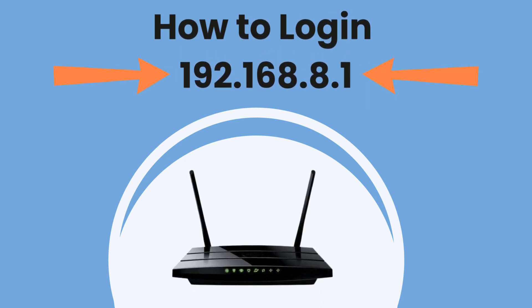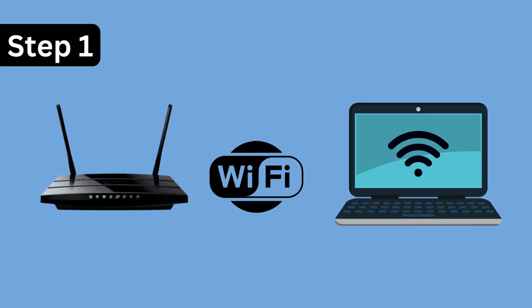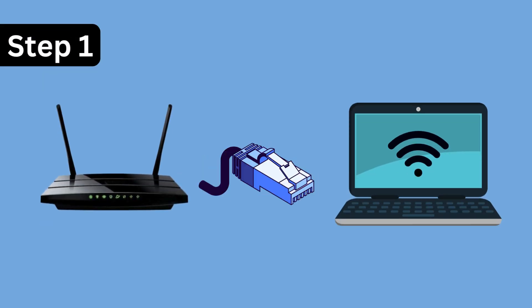How to Login Router IP Address 192.168.8.1. Step 1: Make sure your device is connected to the modem, either via Wi-Fi or an Ethernet cable.